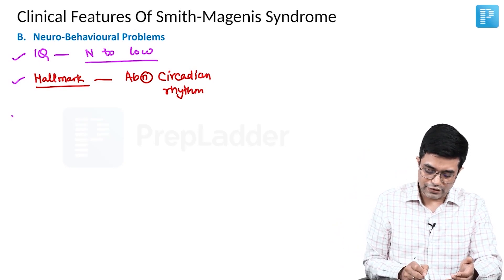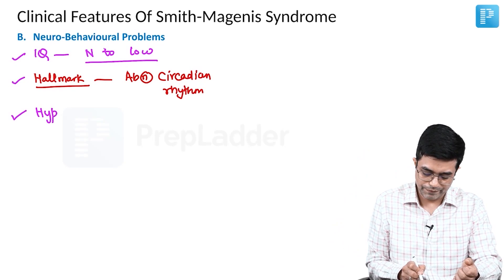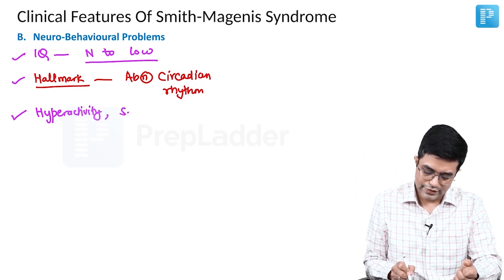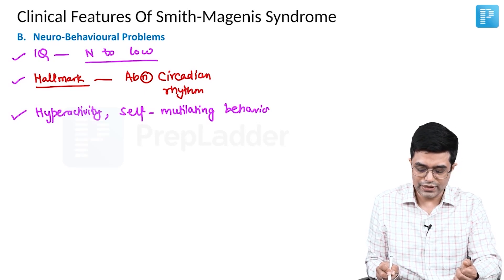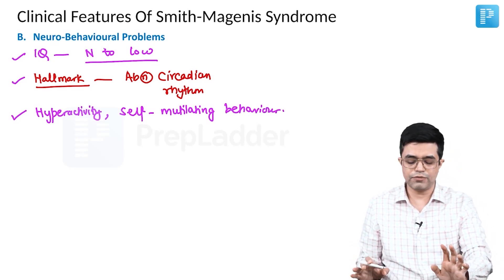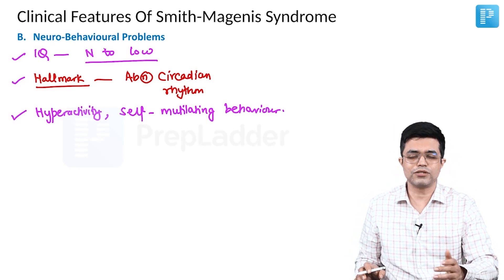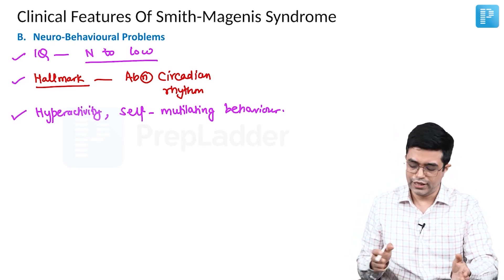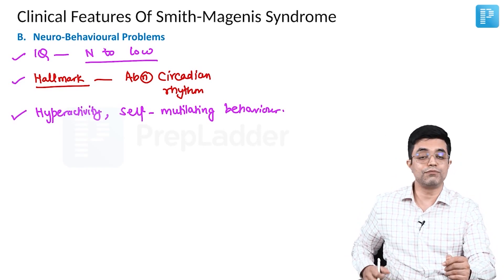Other behavioral changes described in Smith-Magnese syndrome include hyperactivity and self-mutilating behavior. Not all features will be present in every child, but all have been described. Self-mutilating behavior is usually associated with Lesch-Nyhan syndrome, but patients with Smith-Magnese syndrome also show self-mutilating behavior.